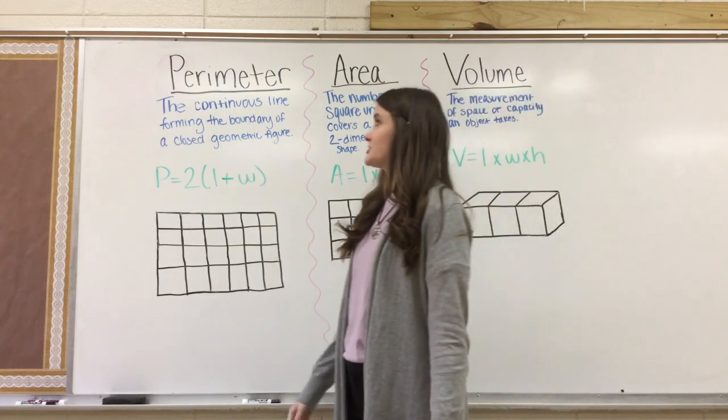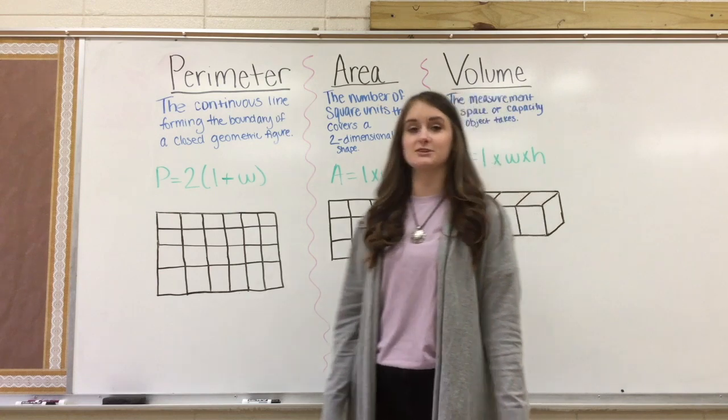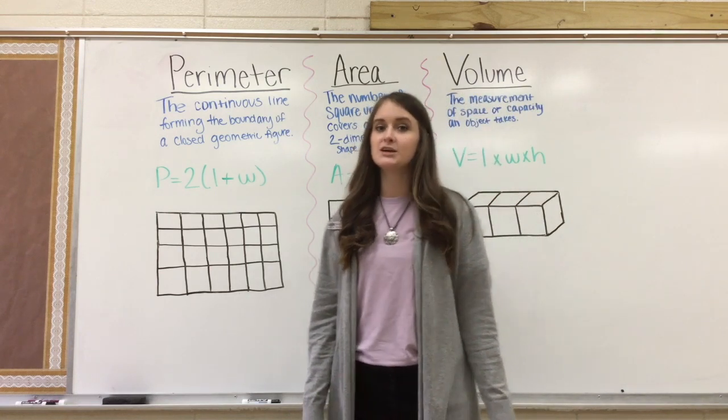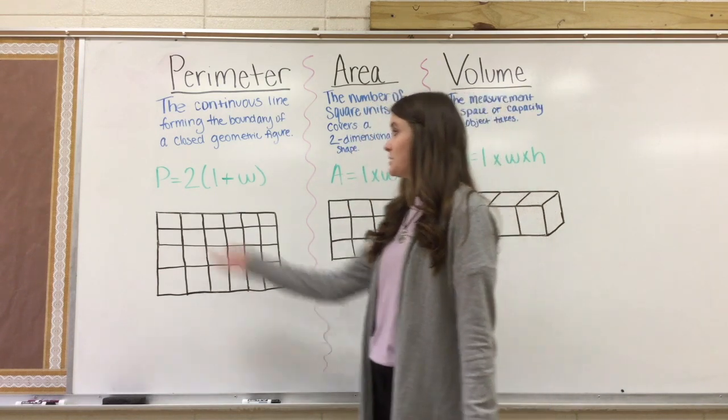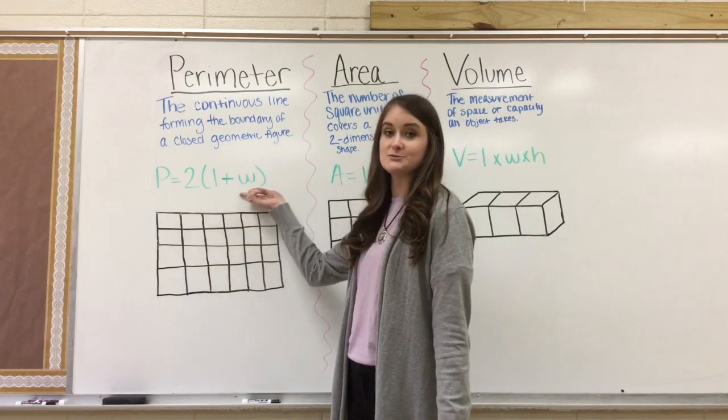We're going to start with perimeter. Perimeter is defined as the continuous line forming the boundary of a closed geometric figure. The formula for perimeter is P equals 2 times length plus width.